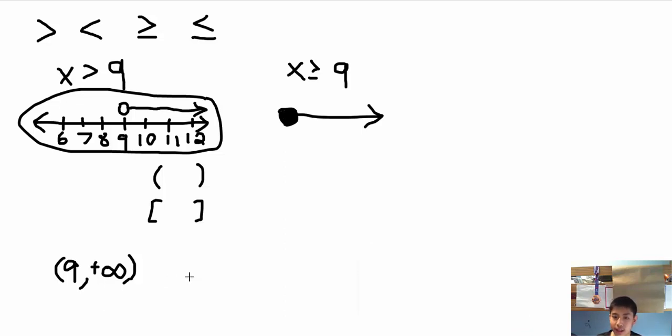Now x is greater than or equal to 9. The only difference now is that we are including the value 9 in our solution set, so 9 would be next to brackets, we're including it. The same goes for infinity, positive infinity. Now we never include brackets for infinity, it is always parentheses.